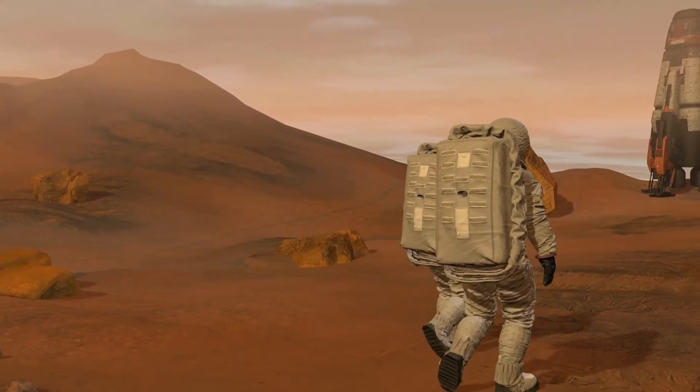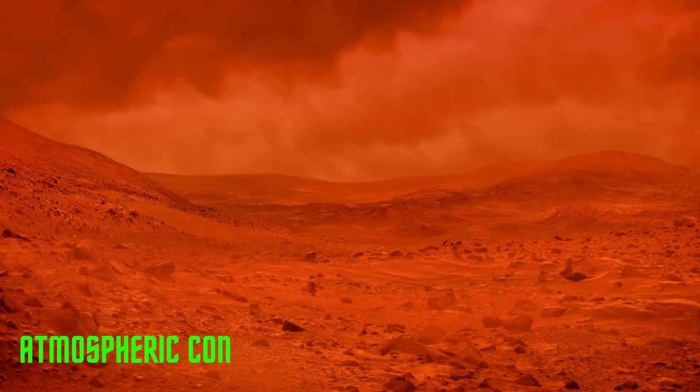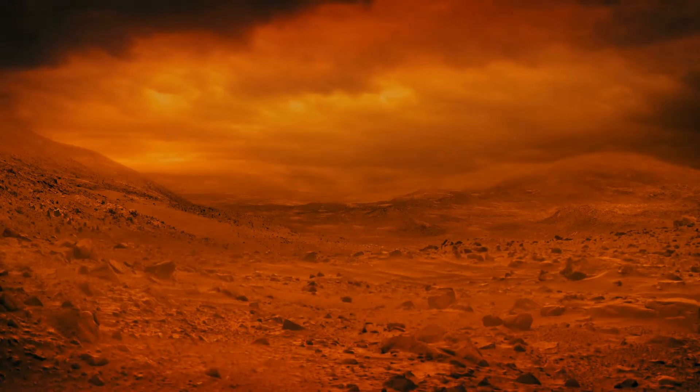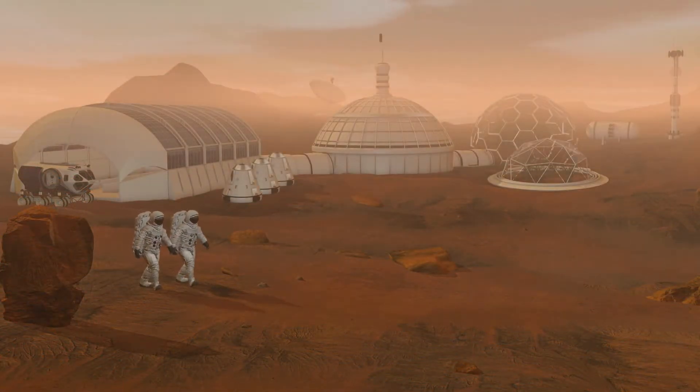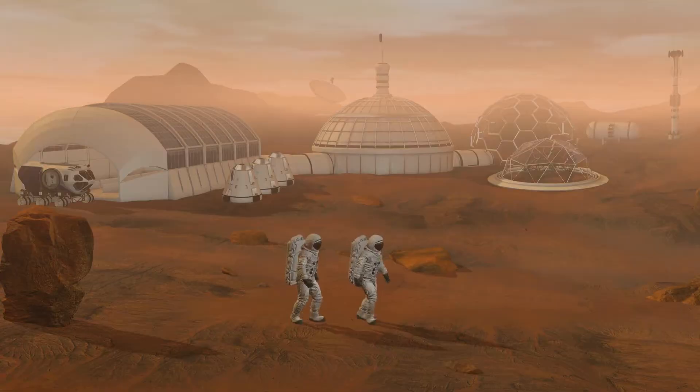Some challenges that we will encounter in colonizing Mars are atmospheric conditions. Mars has a thin atmosphere composed mainly of carbon dioxide, making it unsuitable for human survival. Creating habitable environments would require the introduction of greenhouse gases, such as methane or fluorocarbons, to thicken the atmosphere and raise the temperature. Over time, the greenhouse effect could gradually warm the planet.